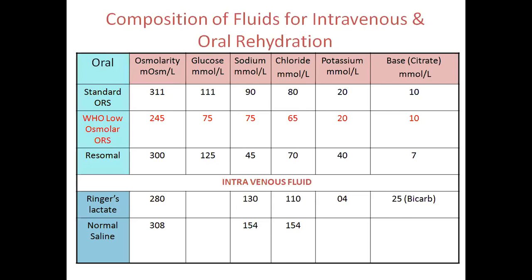This slide shows the composition of ORS. Standard ORS, low-osmolar ORS, and ReSoMal - each numerical value is important as it can be asked in MCQs. For low-osmolar ORS, osmolarity is 245. Glucose and sodium are both 75; chloride is 65 (75 minus 10) and potassium is 20 (10 plus 10) - easy to remember. ReSoMal is used in dehydration or diarrhea in malnourished children.